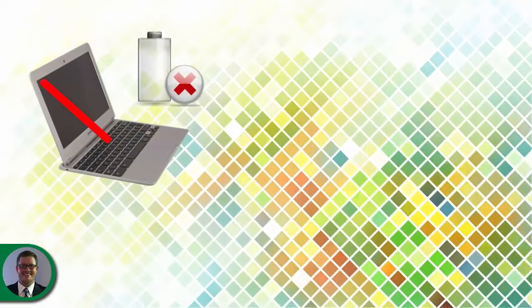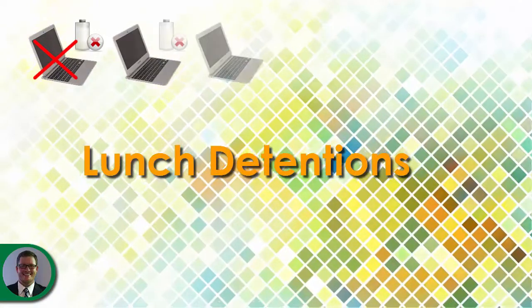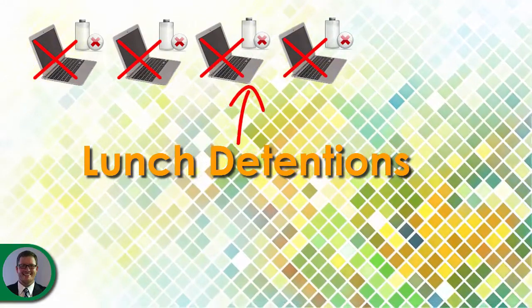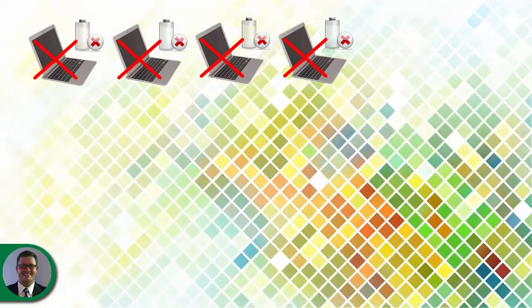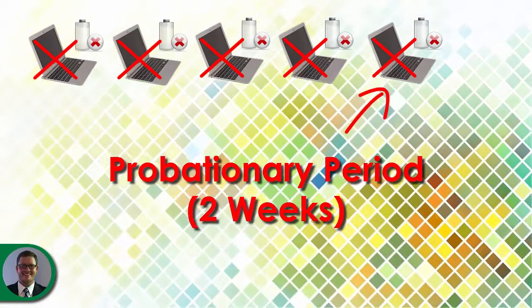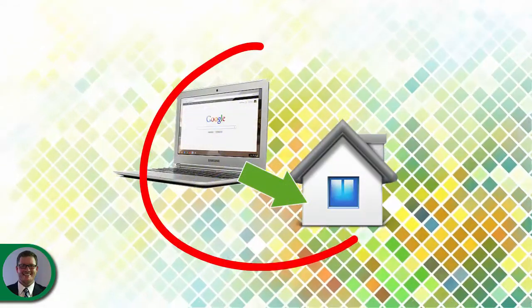Every student will get one warning each nine weeks for a forgotten or uncharged device. After this warning, consequences will be as follows: you will be assigned a lunch detention for the next three times you either forget or do not charge your Chromebook. After the fourth time, the student will lose the privilege of bringing home their device for two weeks. If being unprepared for class continues, the school has the right to revoke the student's right to bring the device home.